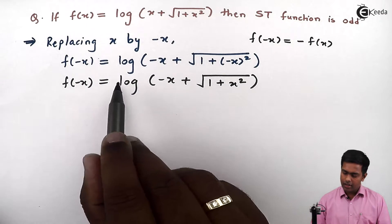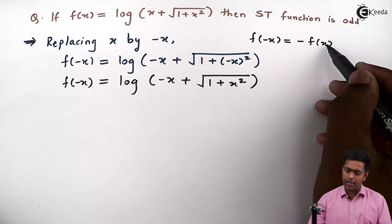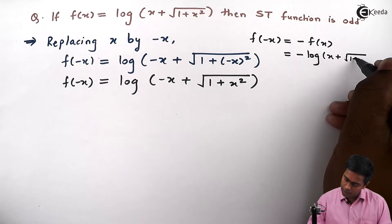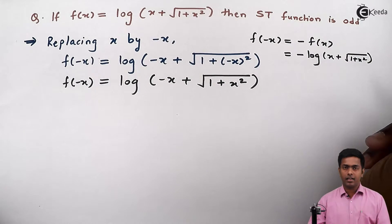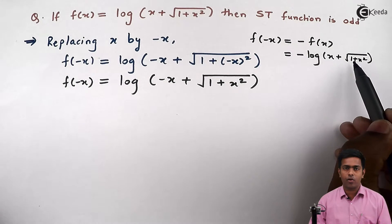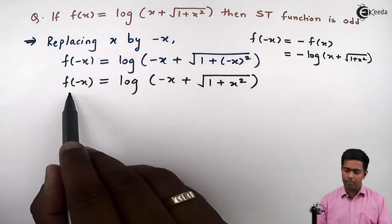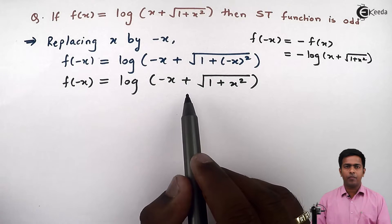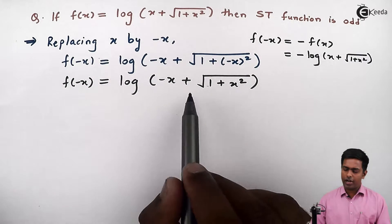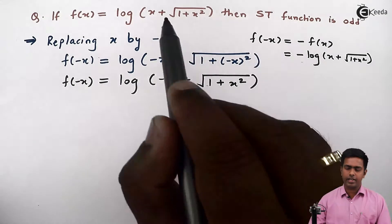But if you see, this is not at all equal to -f(x), because -f(x) would be minus of log of (x plus root of 1 plus x squared). Until we get that value for f(-x), we cannot say it is an odd function. So to get this value, we will perform rationalization because we can see a root here.